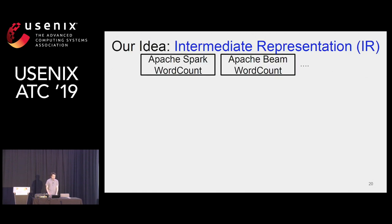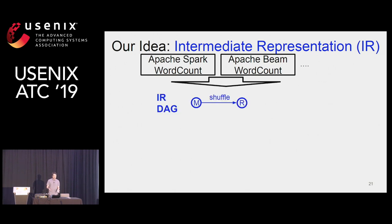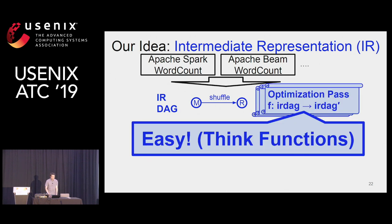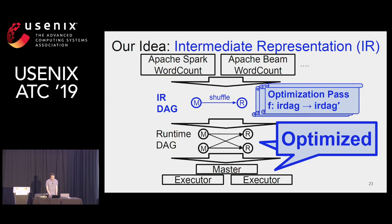Our idea is an intermediate representation, or IR. Given different applications written using different programming models, we convert an application to an IR DAG with vertices representing logical operations and edges representing communication patterns — here we have a shuffle dependency. We then introduced an abstraction called optimization pass, which is simply a function from an IR DAG to a new IR DAG. Writing these passes is much easier than direct specialization because you just think in terms of how to transform the IR DAG.